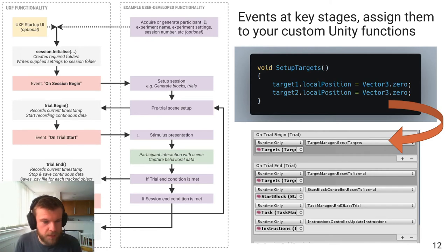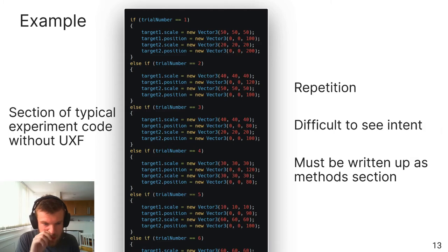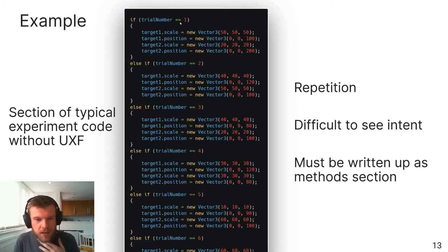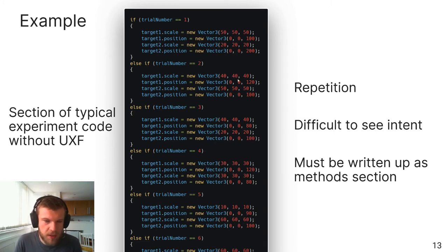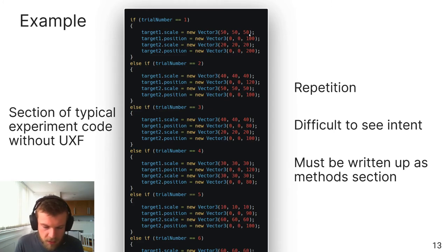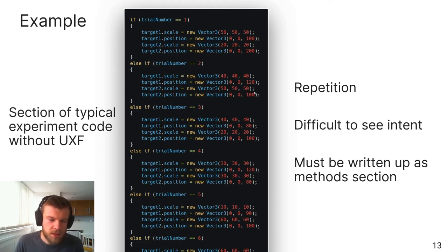If you look at typical experiment code, some people write it like this: trial one, two, three, four, five, with something different happening on each trial. You can see how this gets really messy — there's repetition, we don't know why certain values appear at certain times, and if you're writing a methods section for a paper you have to go back and write all this up. UXF can help make this much more readable and maintainable.